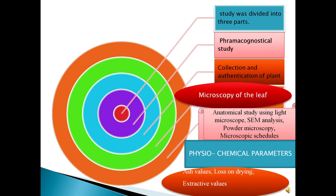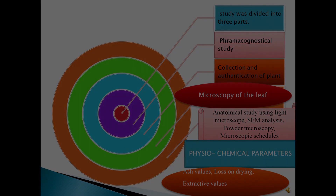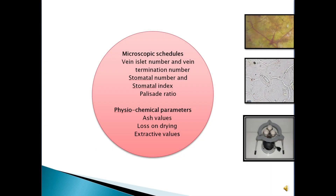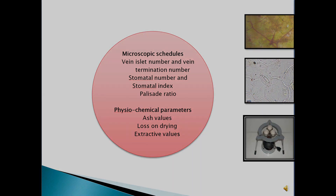There are three parts of pharmacognostical studies: collection and authentication of plants; microscopy of the leaves; and anatomical study using microscope, semi-analysis, and powder microscopy. Microscopic schedules include vein-islet number, stomatal number, stomatal index, and palisade ratio. Physico-chemical parameters include ash values, loss on drying, extractive value, and moisture content.